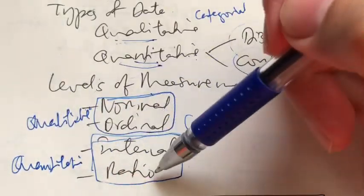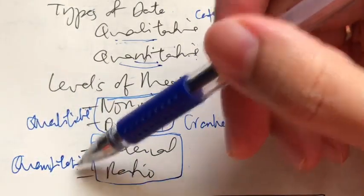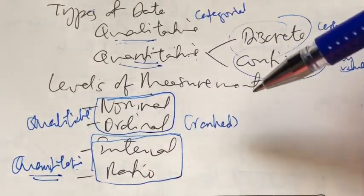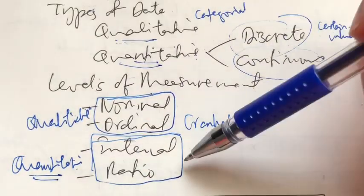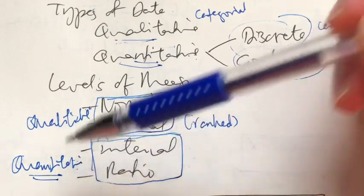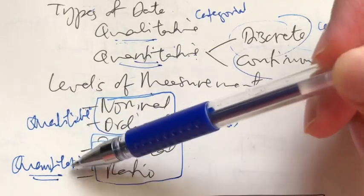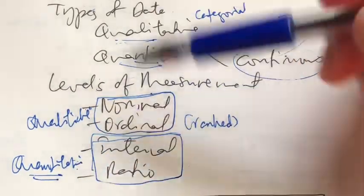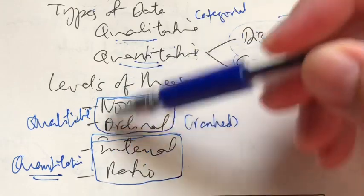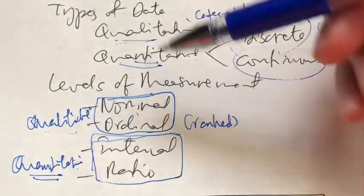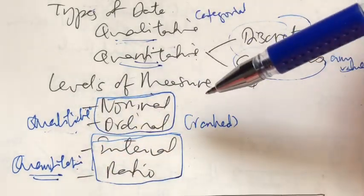To summarize: the first two levels — nominal and ordinal — usually involve qualitative data or qualitative variables, whereas interval and ratio levels usually involve quantitative data and variables, because we can measure them numerically. With numbers attached, the data becomes stronger — we can find percentages, proportions, divide, multiply, and add. Whereas with qualitative data, there's not much we can do with it.